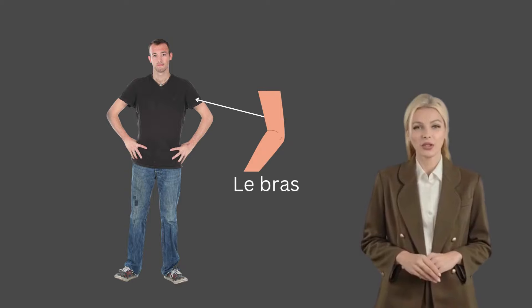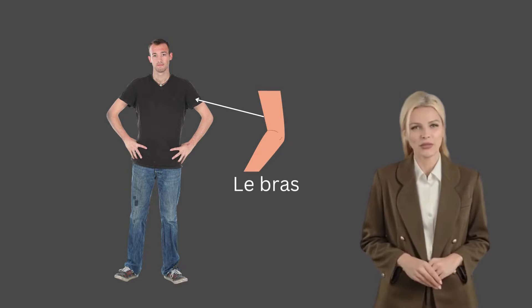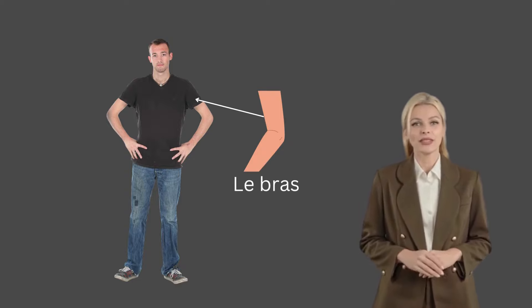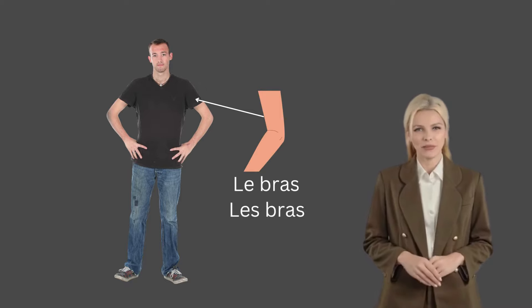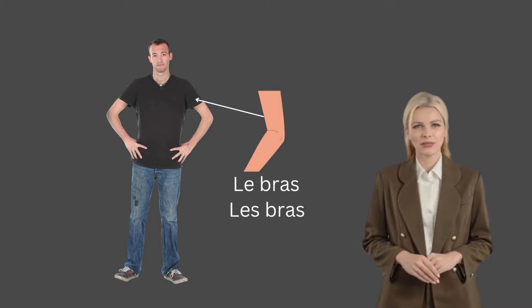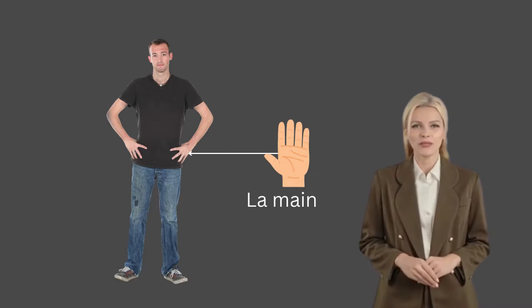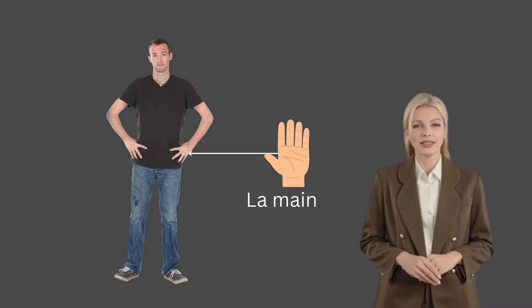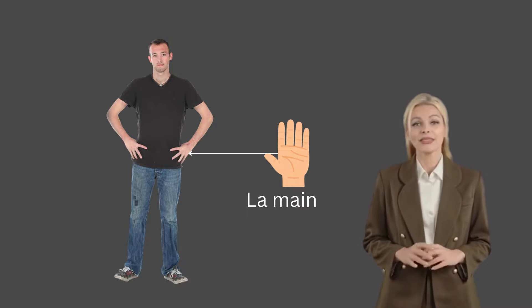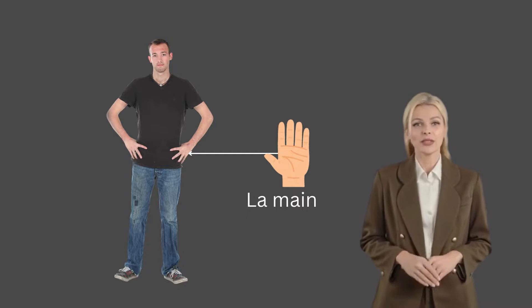If we are talking about both shoulders they are called les épaules. Now let's talk about the arms. If we are talking about one arm we say le bras. If we want to talk about two arms then we say les bras. The hands are called la main, and both hands will be les mains.